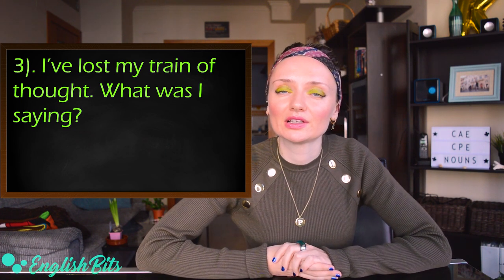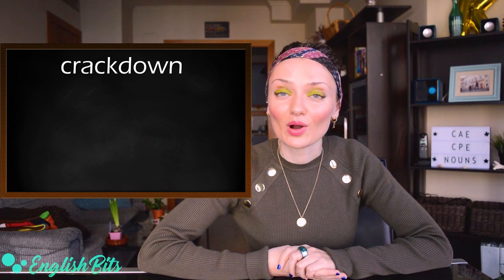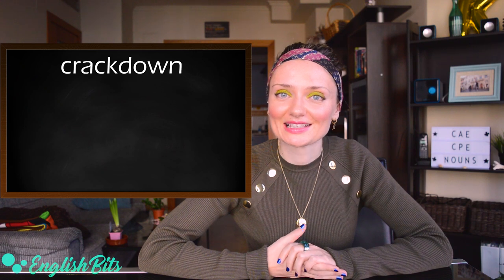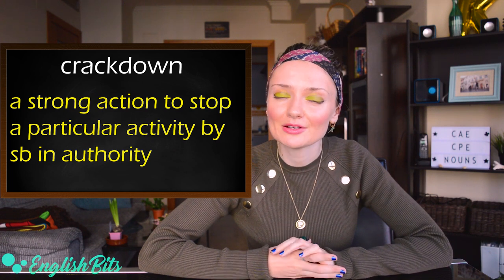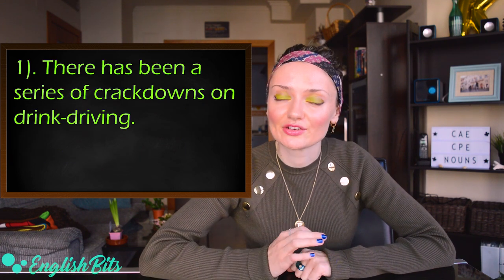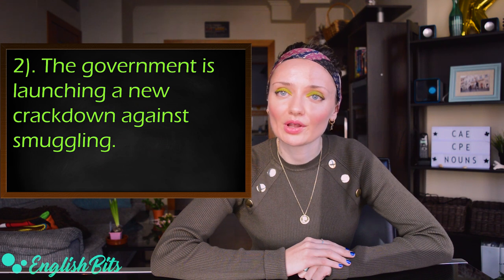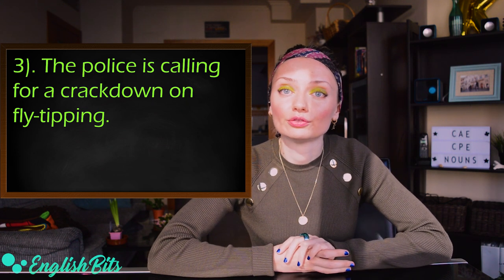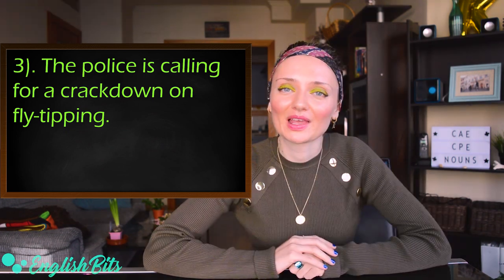Number seven is crackdown. In a previous lesson we learned the phrasal verb to crack down on something; here it's used as a noun. Crackdown means a strong action to prevent a particular activity by someone in authority. Examples: 'There has been a series of crackdowns on drink driving.' 'The government is launching a new crackdown against smuggling.' 'The police is calling for a crackdown on fly-tipping' — fly-tipping means illegally dumping rubbish in public places.